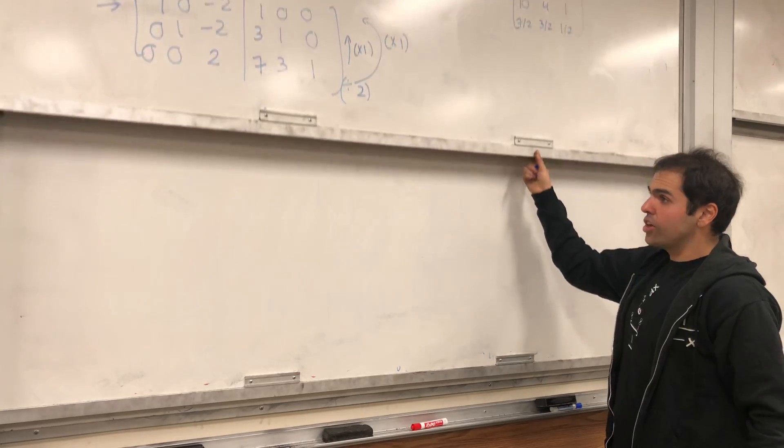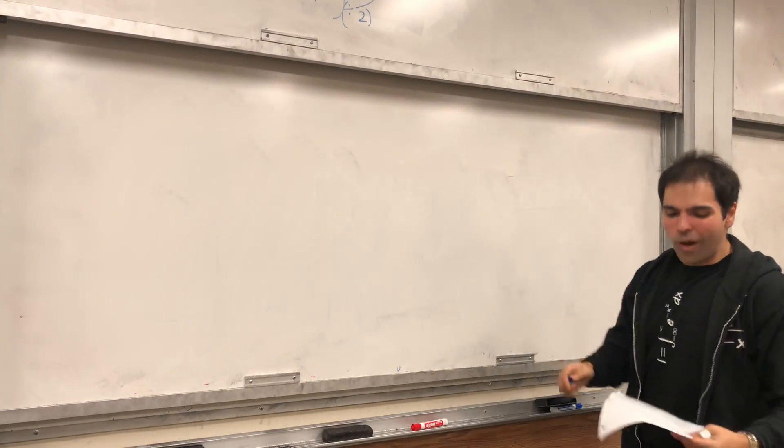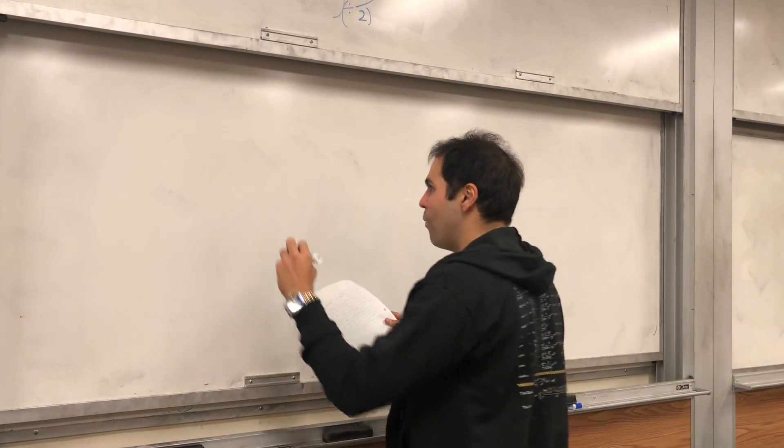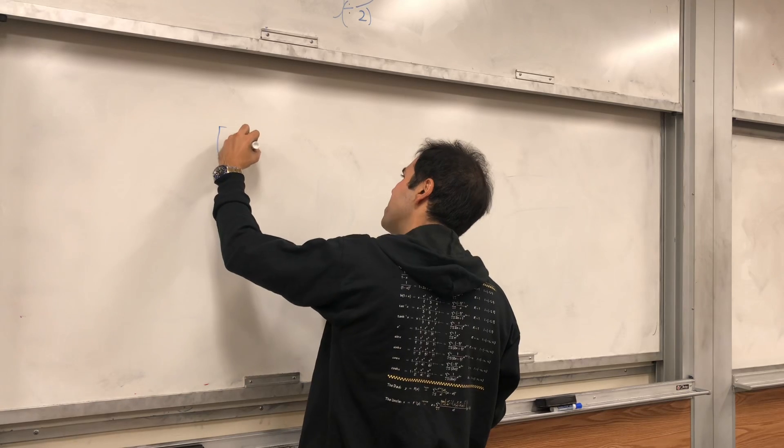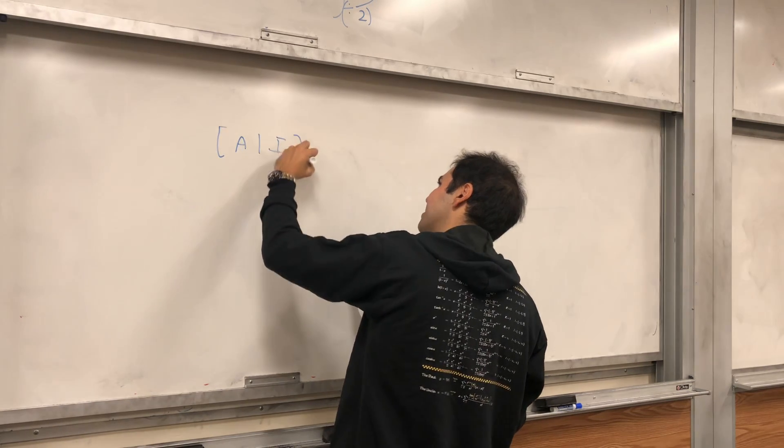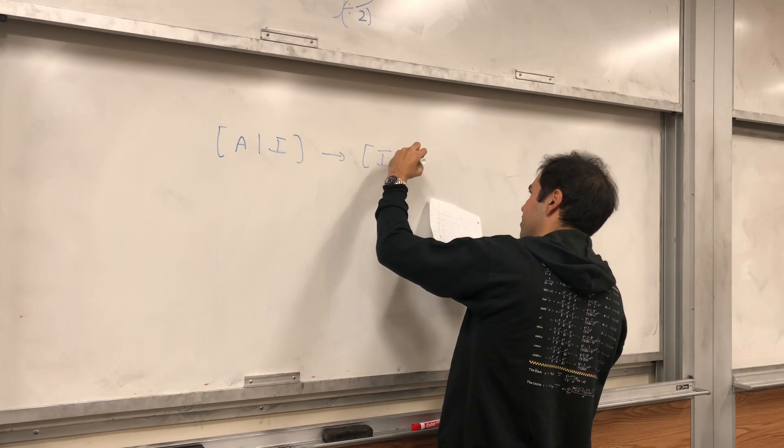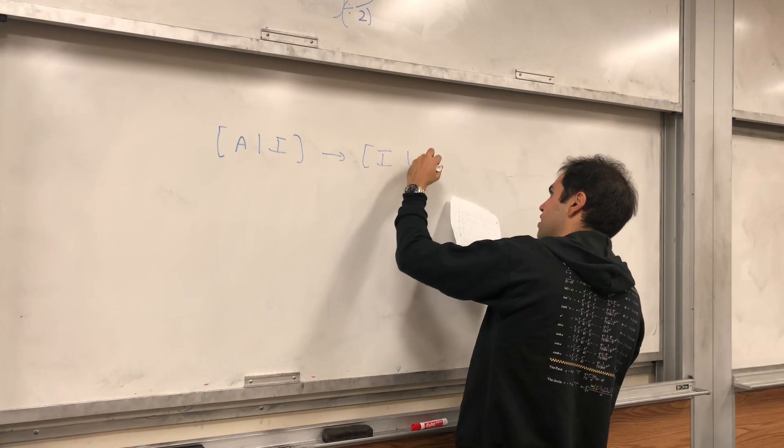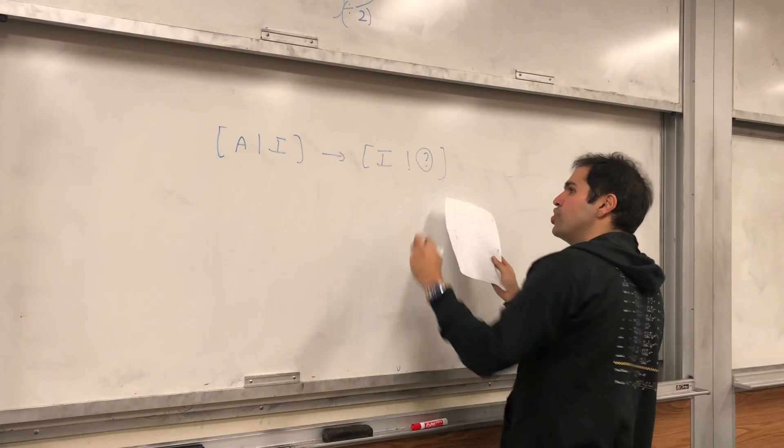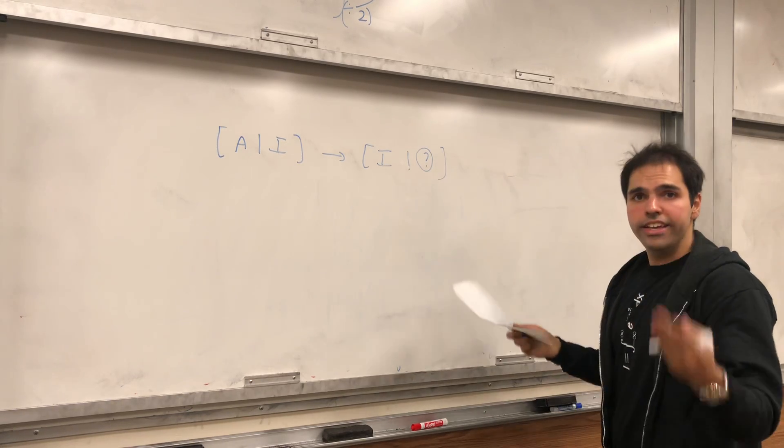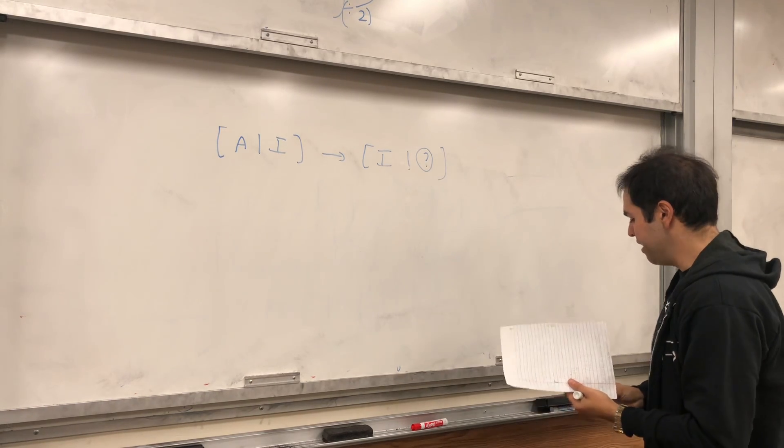Now, the next couple of minutes, let me just explain you why this works. So, what have we done? We had our matrix A and the identity, and we reduced it to identity and something else.